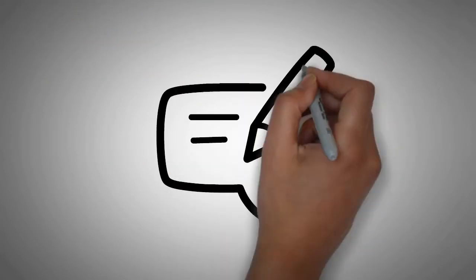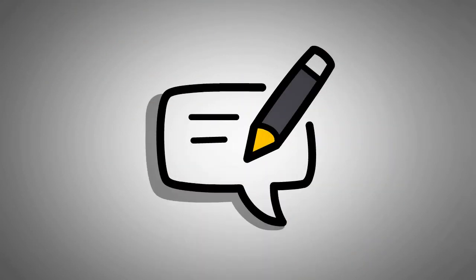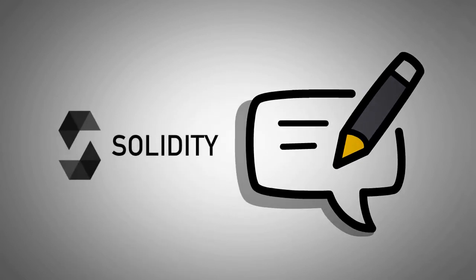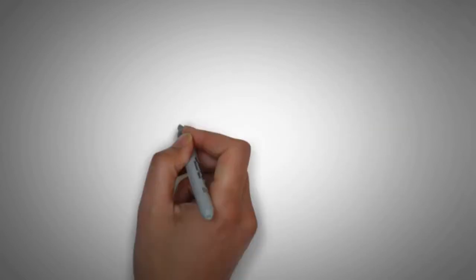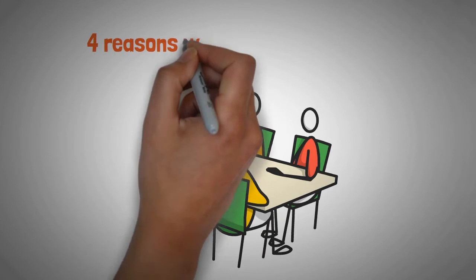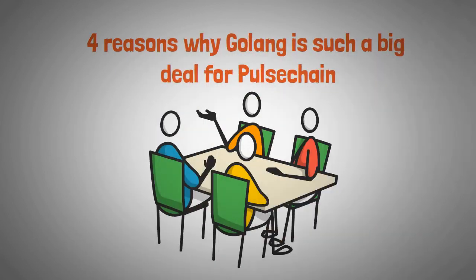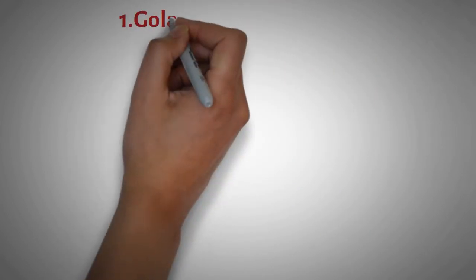Golang is great for nodes and writing code to interact with a blockchain, while Solidity is for smart contracts. Now let's talk about four reasons why Golang is such a big deal for PulseChain. Firstly, Golang is more scalable.